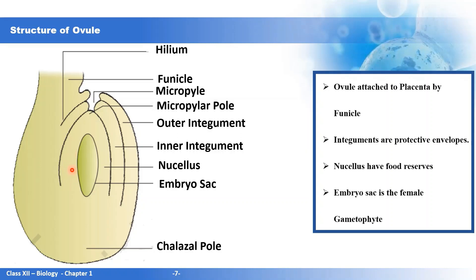The nucellus has food reserves. Within the nucellus is the embryo sac — the female gametophyte — which produces the female gamete, the egg. The micropylar end is where the pollen tube enters, and opposite to it is the chalazal pole. Next we will discuss the development of the embryo sac.